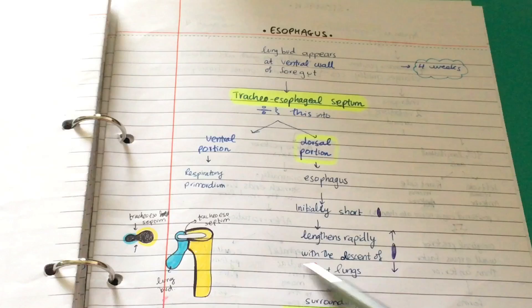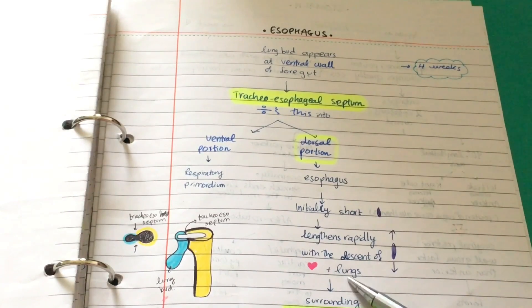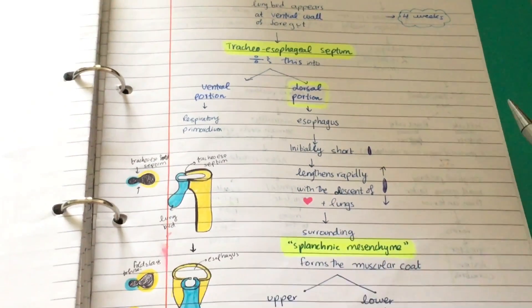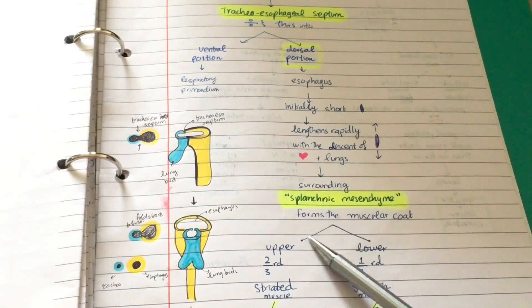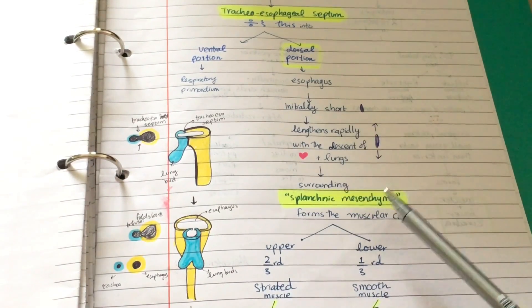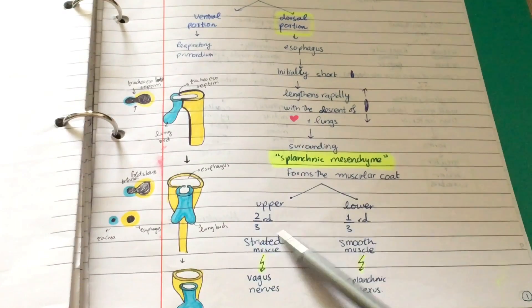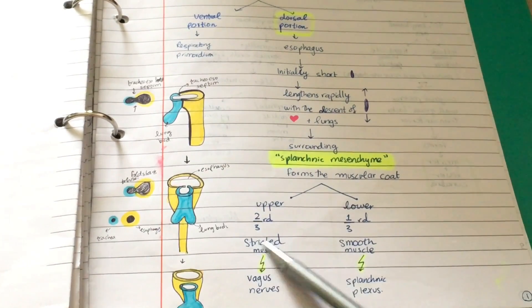The esophagus then lengthens rapidly with the descent of the heart and lungs. The surrounding splanchnic mesenchyme forms the muscular coat of the esophagus.